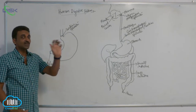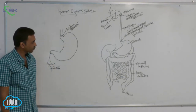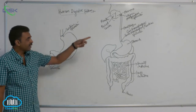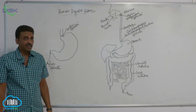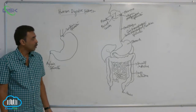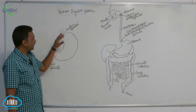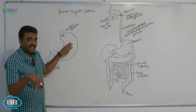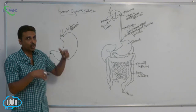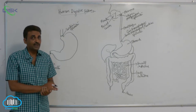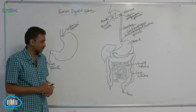In between these two sphincters, that total area is actually the stomach. The cardiac sphincter is also called the gastroesophageal sphincter or the lower esophageal sphincter. After food has entered into the stomach, it is prevented from going back into the esophagus by the cardiac sphincter — so it prevents regurgitation.